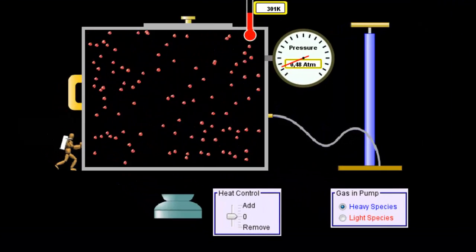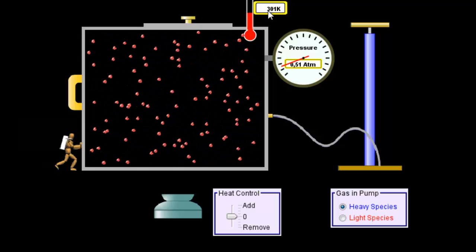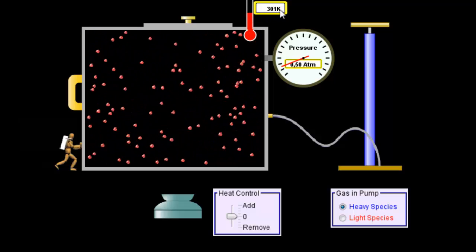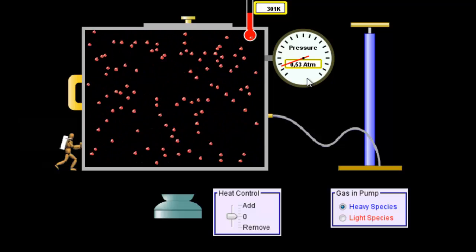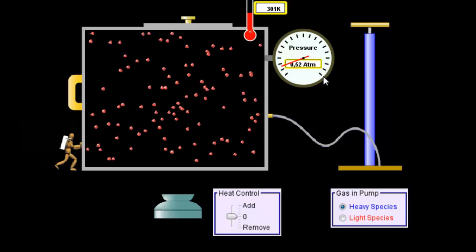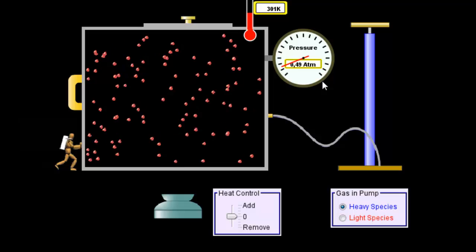You can see the temperature has risen to a certain value. It wasn't at 301 kelvins before. You can also see that the pressure gauge is now not reading zero atmospheres as it was before.